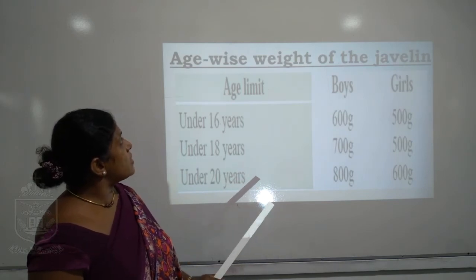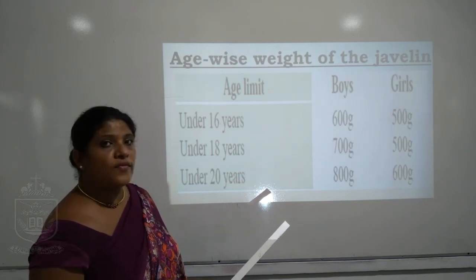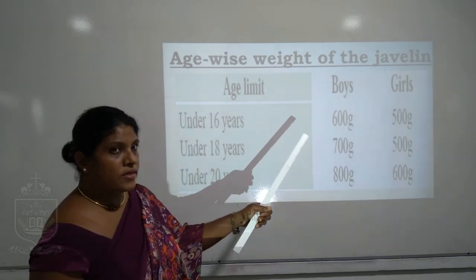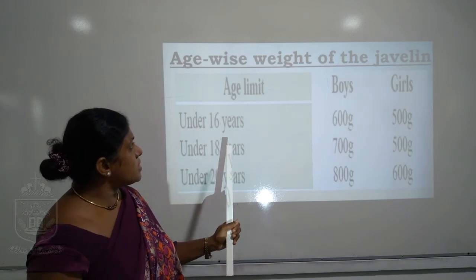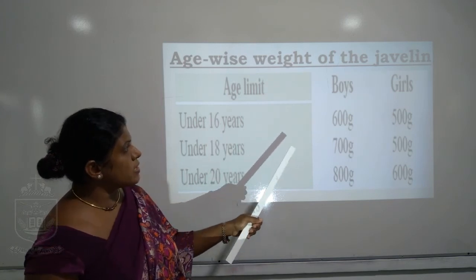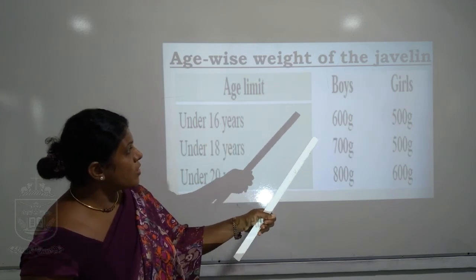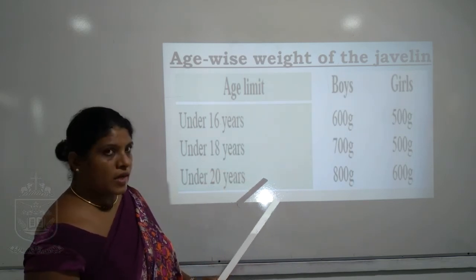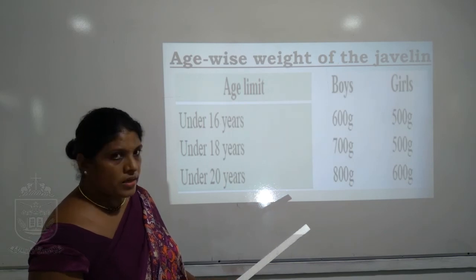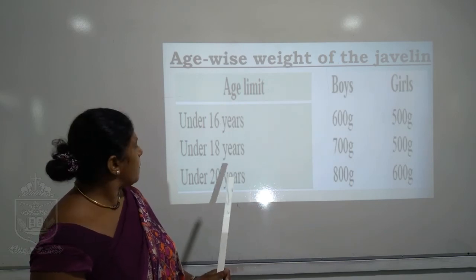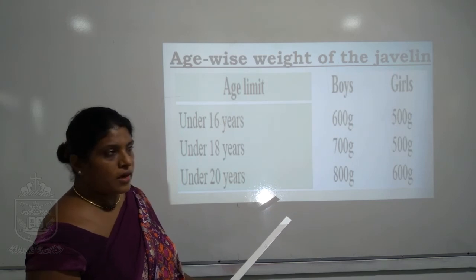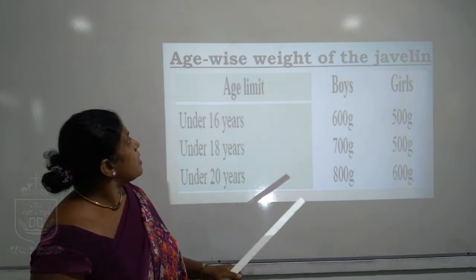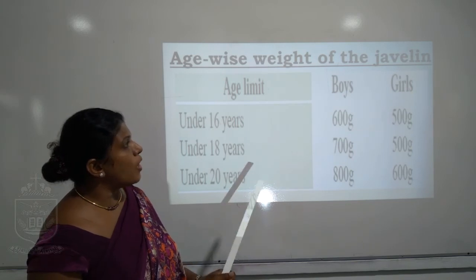Now we will see the age-wise weight of the javelin. Under-16 boys: 600 grams; girls: 500 grams. Under-18 boys: 700 grams; girls: 500 grams. Under-20 boys: 800 grams; girls: 600 grams.